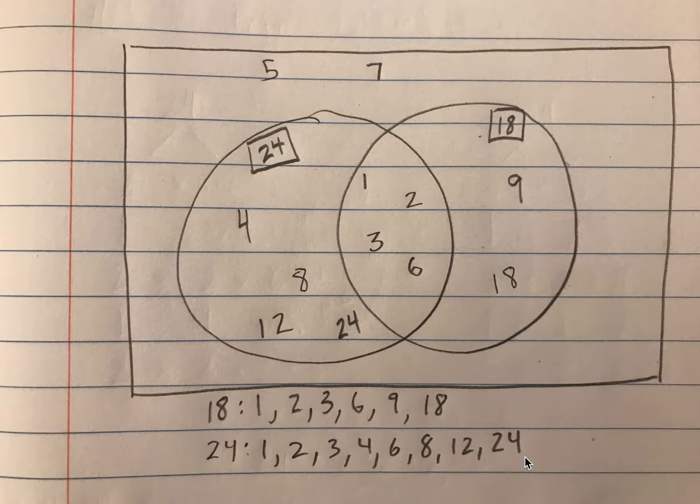Any factor that is in common between two numbers needs to be put into the intersection, the overlap. Any factor that 18 has that 24 does not goes in the 18 side, and likewise factors that 24 has that 18 does not goes in the 24 side.